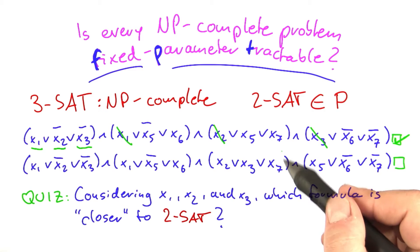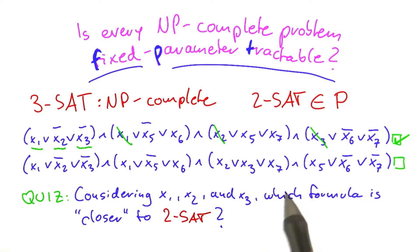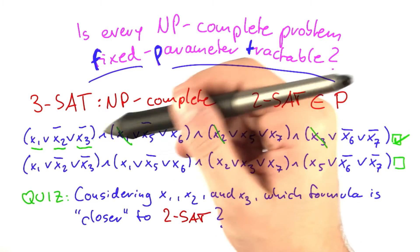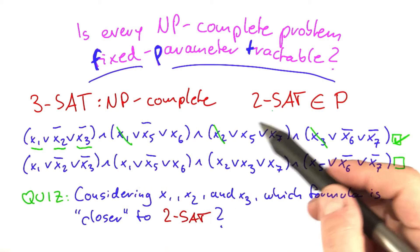Of course, this is a very simple example, so you could have already figured it out how to solve it. There's many different ways to solve it, but I just wanted to show you what I mean by distance of a 3-SAT instance to a 2-SAT instance.